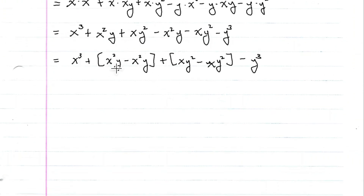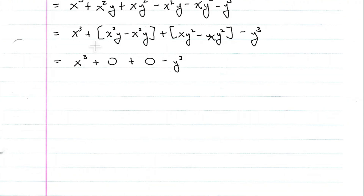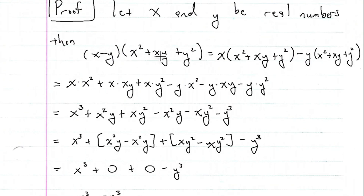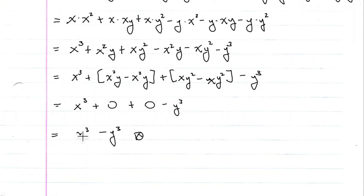We see that we have a number and its additive inverse, so this is going to be zero. And then we have the same thing here — a number and its additive inverse — also zero. And then minus y cubed. We also know that any number added with the additive identity is going to be the same thing. So we have x cubed minus y cubed. As we see, we went from x minus y times x squared plus xy plus y squared to x cubed minus y cubed. And that is the proof.